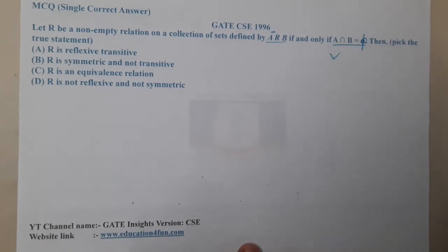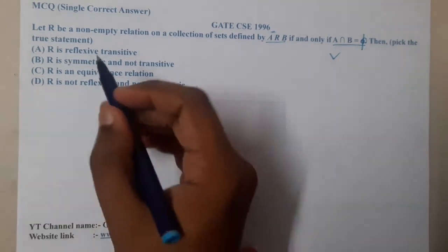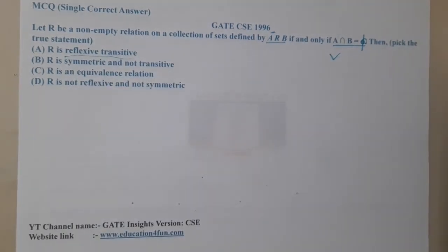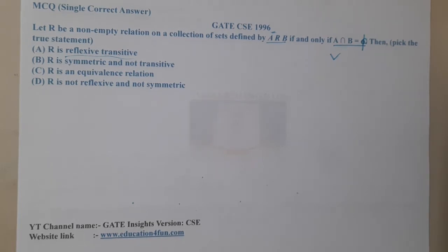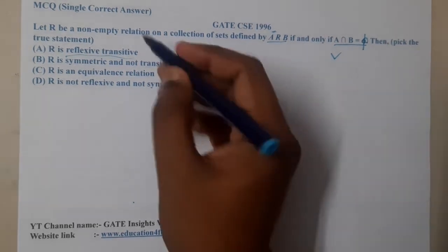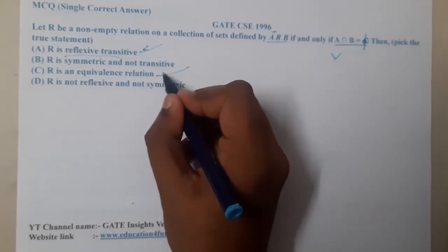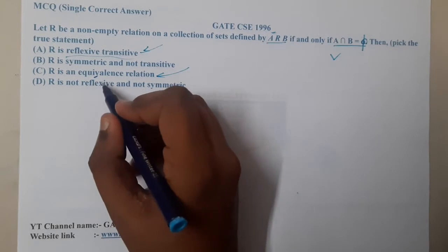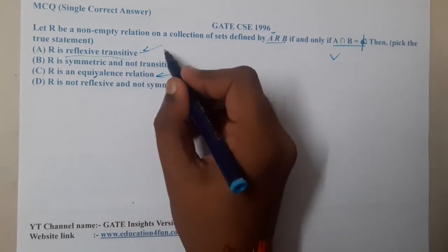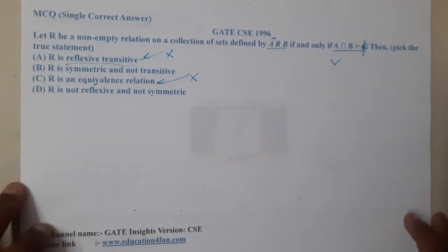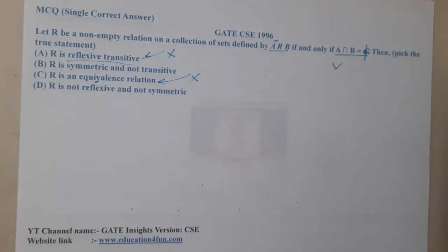So if a intersection b equals the empty set, how can it be reflexive? Option A says it is reflexive, so I am 100% sure option A is false. Similarly, if a relation is an equivalence relation it must also satisfy reflexive, so option C is also eliminated. With that simple understanding we can remove those two options.